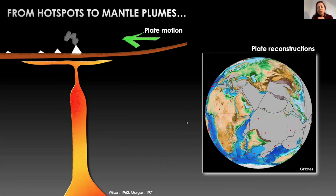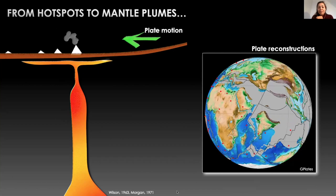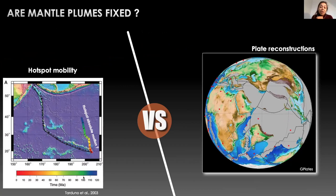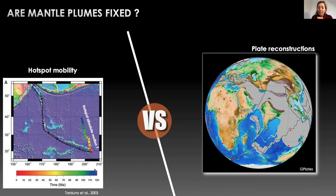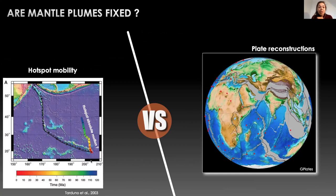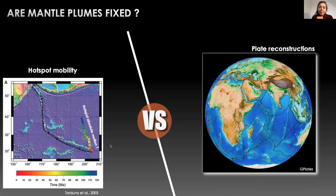As shown on this animation where hotspots are in red. But there are multiple paleomagnetic evidences suggesting that mantle plumes are not fixed, such as this study by Tarduno et al. in 2003 showing a southward motion of the Hawaiian hotspot, possibly reaching a speed of five centimeters per year between 80 and 60 million years.